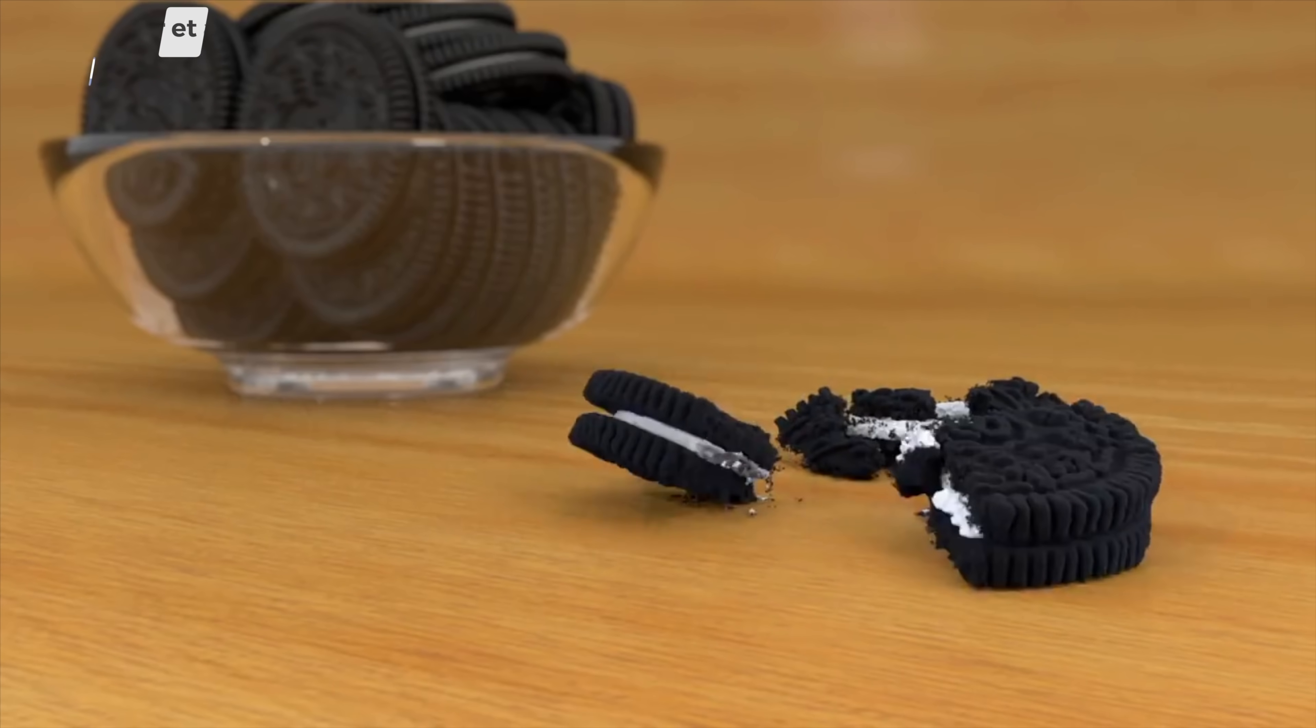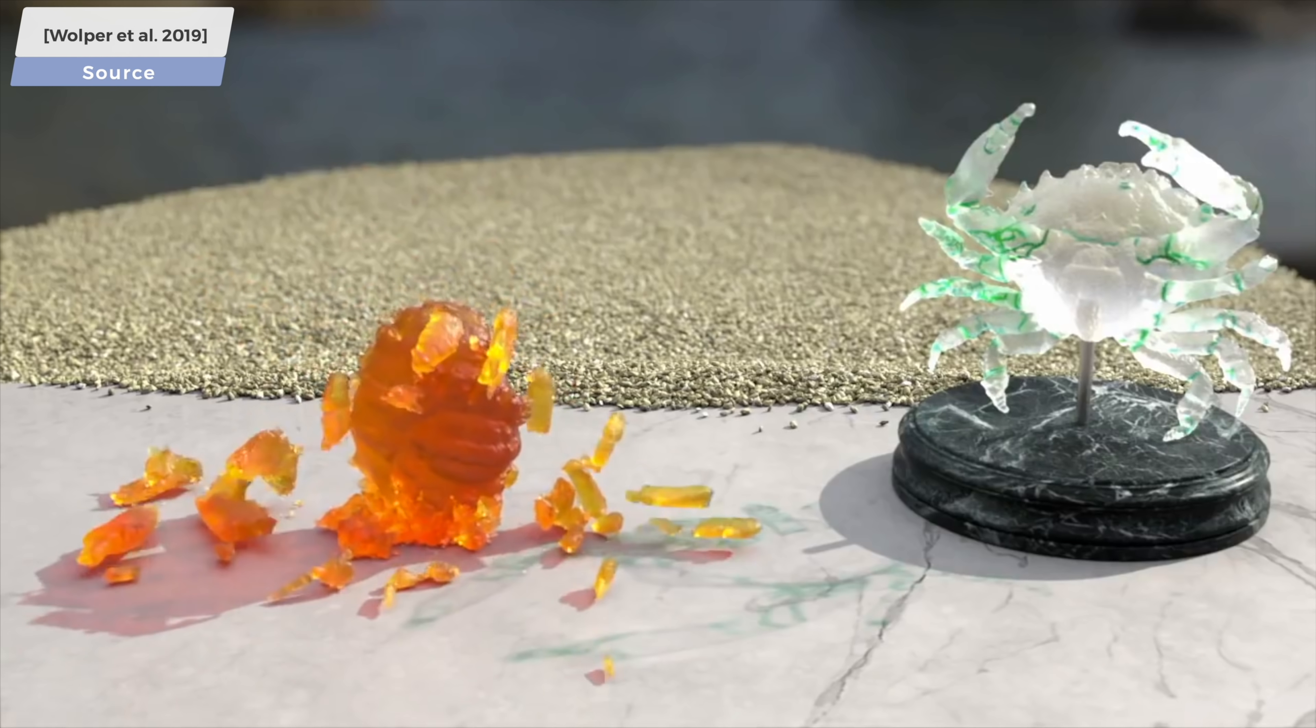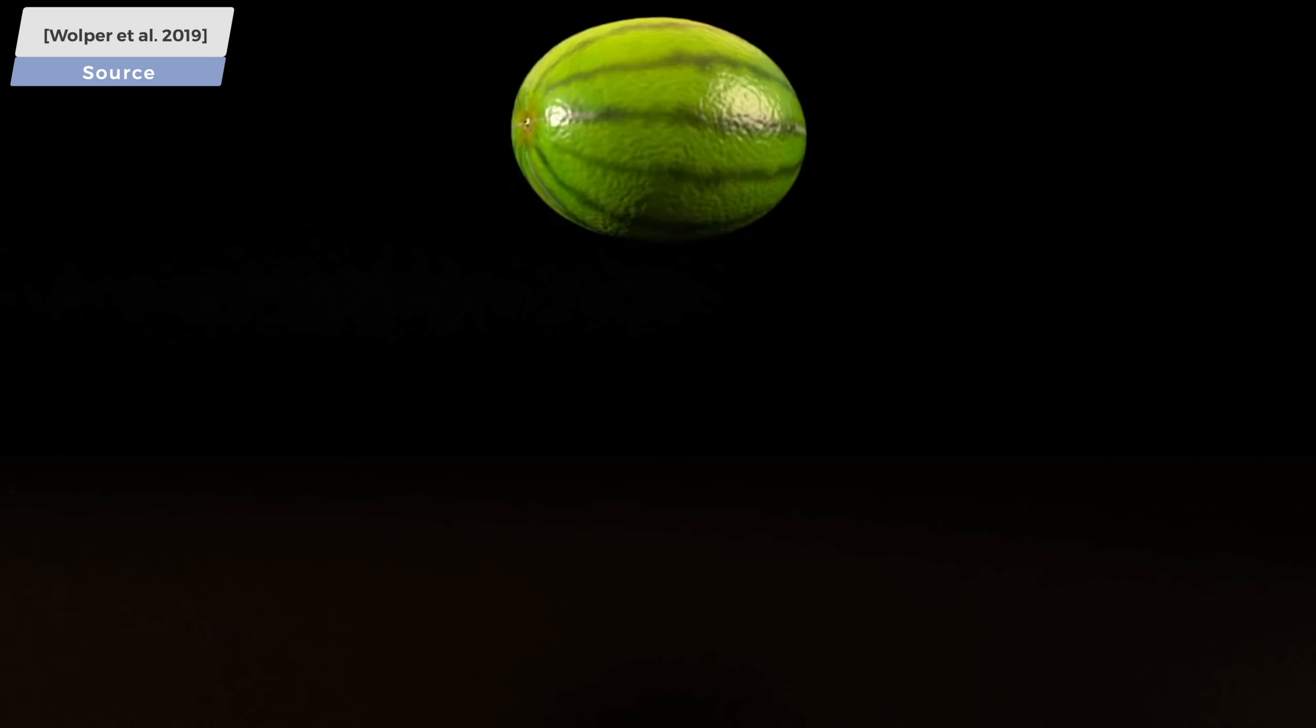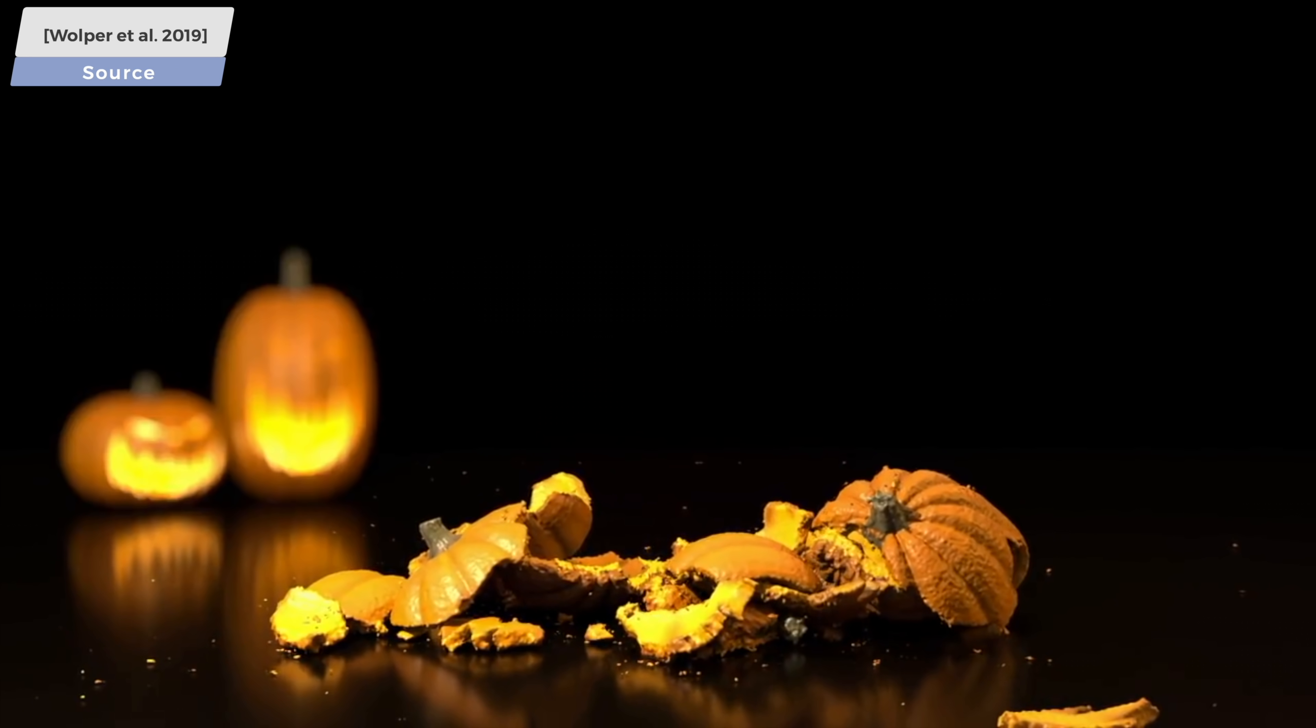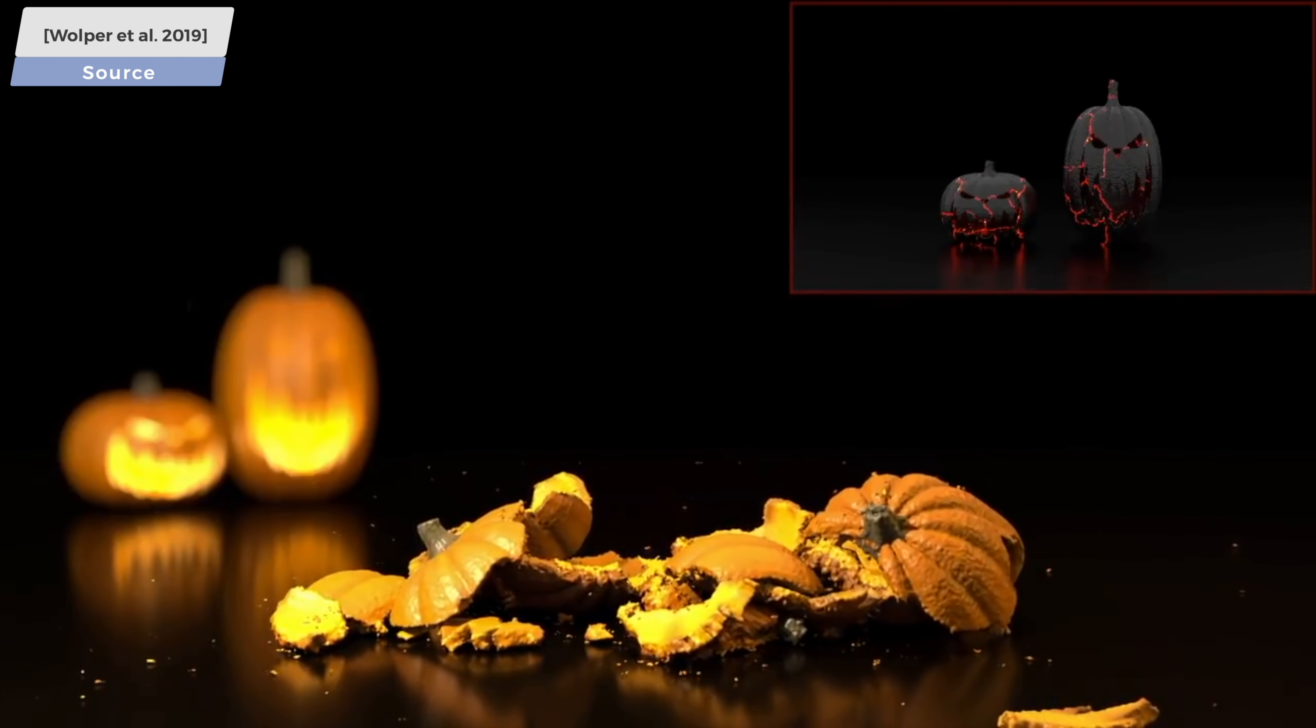This paper aligns well with the favorite pastimes of a computer graphics researcher, which is, of course, destroying virtual objects in a spectacular fashion. Like the previous work, this new paper also builds on top of the material point method, a hybrid simulation technique that uses both particles and grids to create these beautiful animations. However, it traditionally does not support simulating cracking and tearing phenomena.